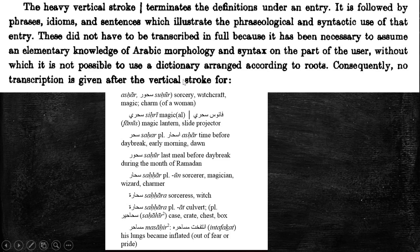We really want this section because he tells you that in order to use his dictionary, you have to have a basic knowledge of Arabic morphology, which goes back to those three-letter root verbs we've been talking about. He says without that knowledge, it is not possible to use a dictionary arranged according to roots. This can be found on page Roman numeral XIV — that's page 14 — in the introduction to the dictionary, before the actual dictionary begins. He's telling you his dictionary is arranged according to the roots of the verbs, which are three letters.